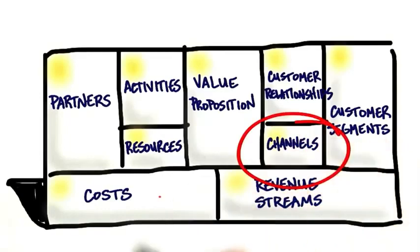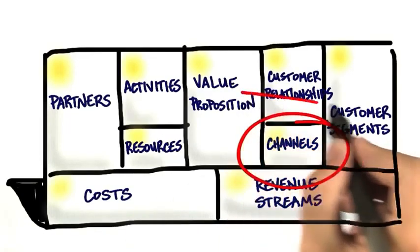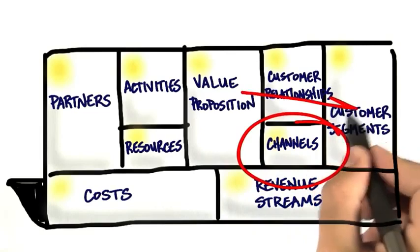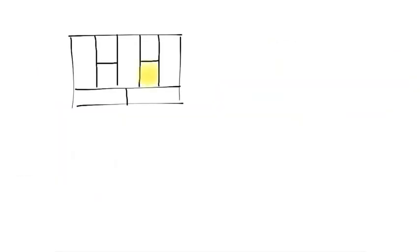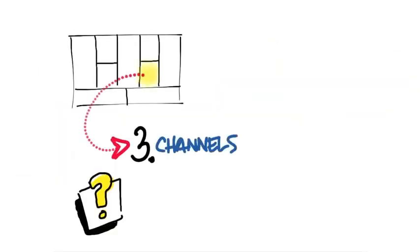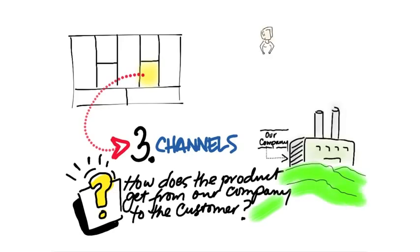The next is channels. How does your product over here get to your customers over here? We use distribution channels to do that. Now what's really interesting is pre-1990s, the only channels to get to a customer was a physical channel — you went to a store, you had salespeople, there was physical distribution.